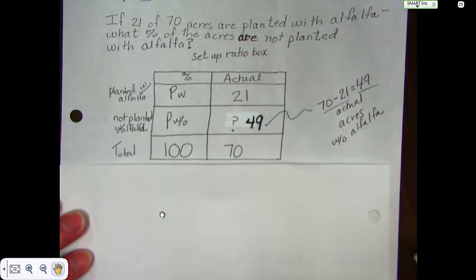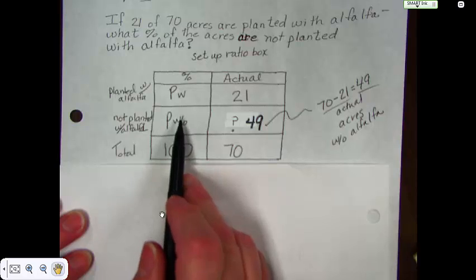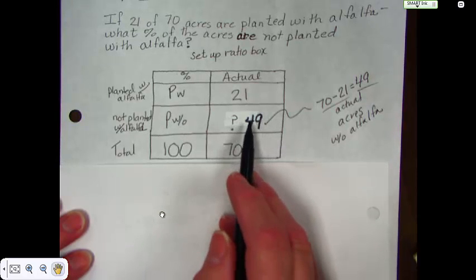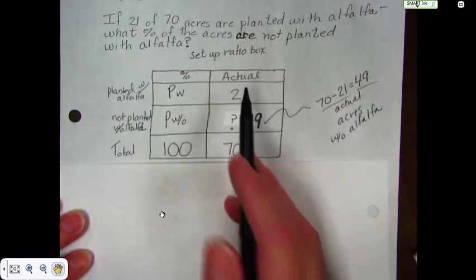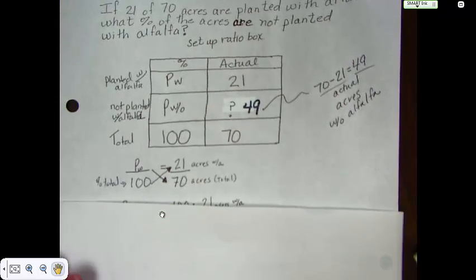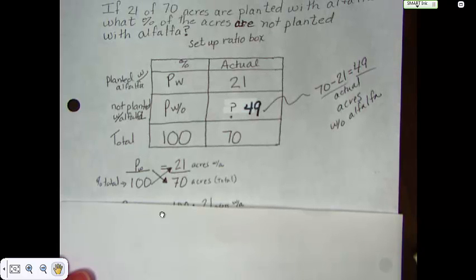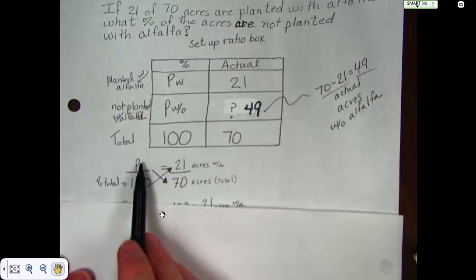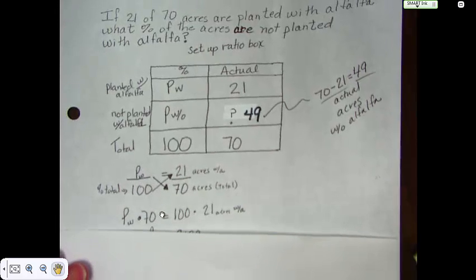So now we've got something we can set up. We could go ahead and set this one up. Without over 100 equals 49 over 70. Or we could go with over 100 equals 21 over 70. We could solve either one. I chose to, since we were looking for not planted, I started planted with, planted with over 100 equals 21 over 70. I went ahead and solved.